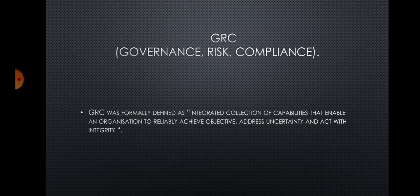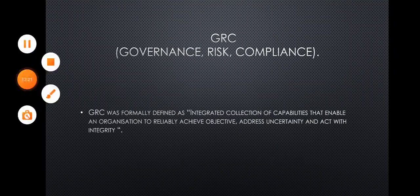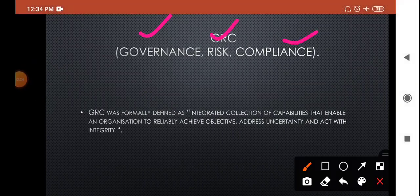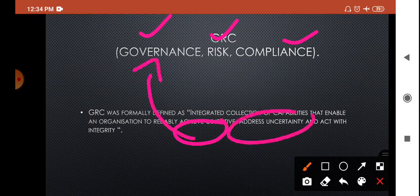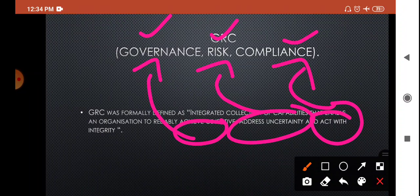Now revisiting the definition: GRC was formally defined as an integrated — that is, together — collection of capabilities that enable an organization to reliably achieve objectives, address uncertainty, and act with integrity. Achieving objectives is linked with governance, addressing uncertainty is linked with risk, and acting with integrity is linked with compliance.